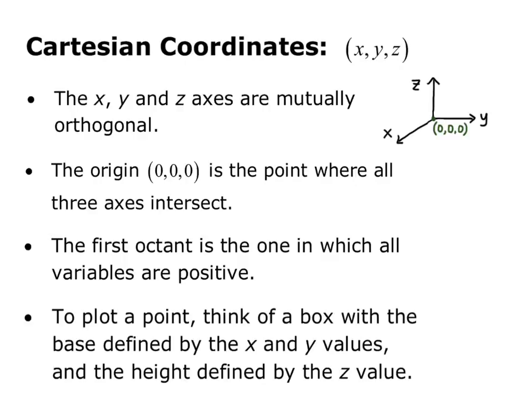To plot a point in the Cartesian coordinate system in three dimensions, think of a box with the base defined by the x and y values and the height defined by the z value.